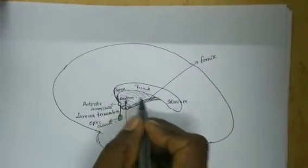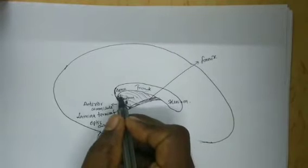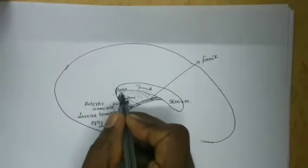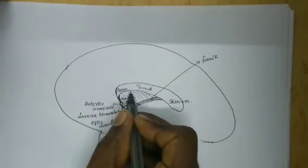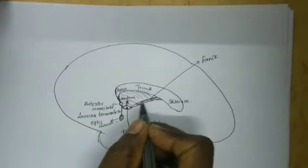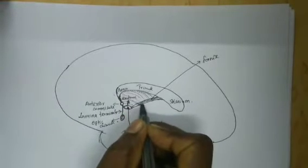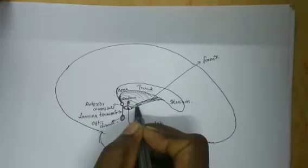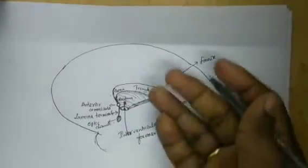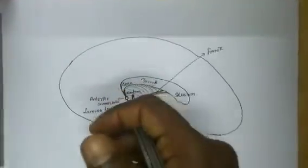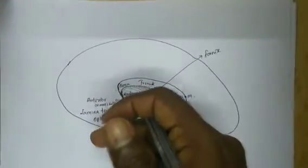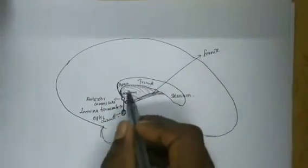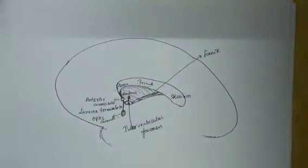You can see this is the septum pellucidum which is extending between the inferior aspect of the corpus callosum and the fornix. So this septum is separating the two lateral ventricles which are present on either side. Both lateral ventricles are separated by the septum pellucidum.